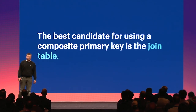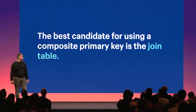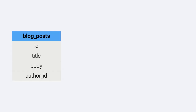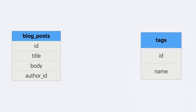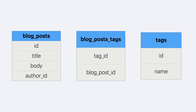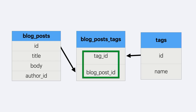Let's turn our attention to a more practical use case: a join table. Join tables are a natural fit for a composite primary key. By using a composite primary key made up of two foreign keys to two related entities, we can ensure we're uniquely representing a single relationship. Consider a blogging system with a blog posts table and a tags table. To represent the many-to-many relationship between them, we have a join table where a combination of tag ID and blog post ID uniquely represents an association — making it a perfect use case for a composite primary key.